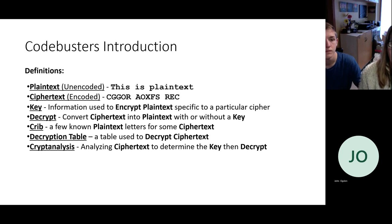Decryption is converting cipher text into plain text with or without a key, and that's basically what they're doing in this whole competition is decrypting. A crib is basically a hint that they're given with some letters so they know what letters equal what in a certain puzzle to get them started. Decryption table is used with certain ciphers. Some of those tables will be provided and some they will need to know how to recreate those tables. And then cryptanalysis is analyzing the cipher text, determine a key and then decrypting.